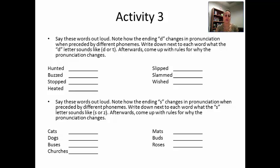The placement and manner of articulation are the same — the only thing that changes is the voicing. Afterwards, come up with rules for why the pronunciation changes. Then do the same thing with the second group of words — 'cats,' 'dogs,' 'buses,' 'churches,' 'mats,' 'buzz,' 'roses.' Say these words out loud and note how the ending 'S' changes in pronunciation, either as 'S' or 'Z,' and come up with rules for why the pronunciation changes. You can pause your video at this point, and we'll pick up once you come back.